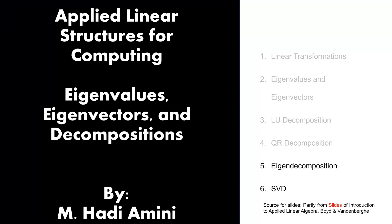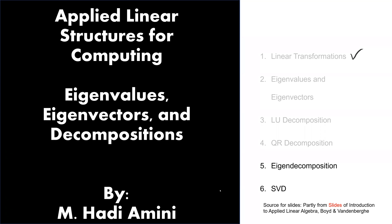This is the last part of this module: eigenvalues, eigenvectors, and decompositions. In this module, we started with linear transformation, then provided a definition for eigenvalues and eigenvectors. We continued with LU decomposition and QR decomposition, elaborating on each and how we can find them using Python and MATLAB. Now we are going to talk about the last two decompositions: eigen decomposition and singular value decomposition.